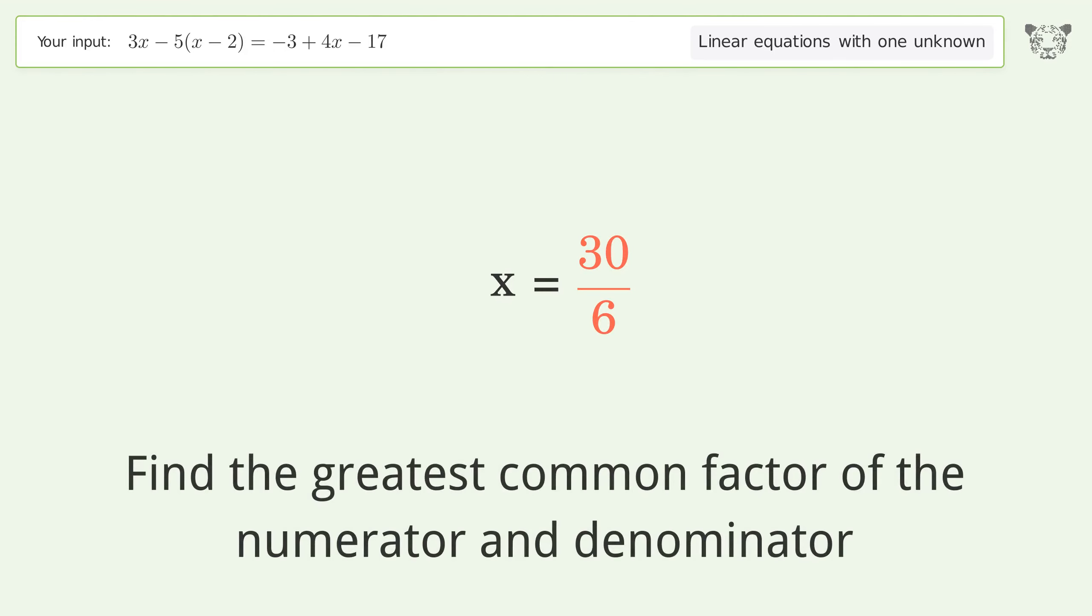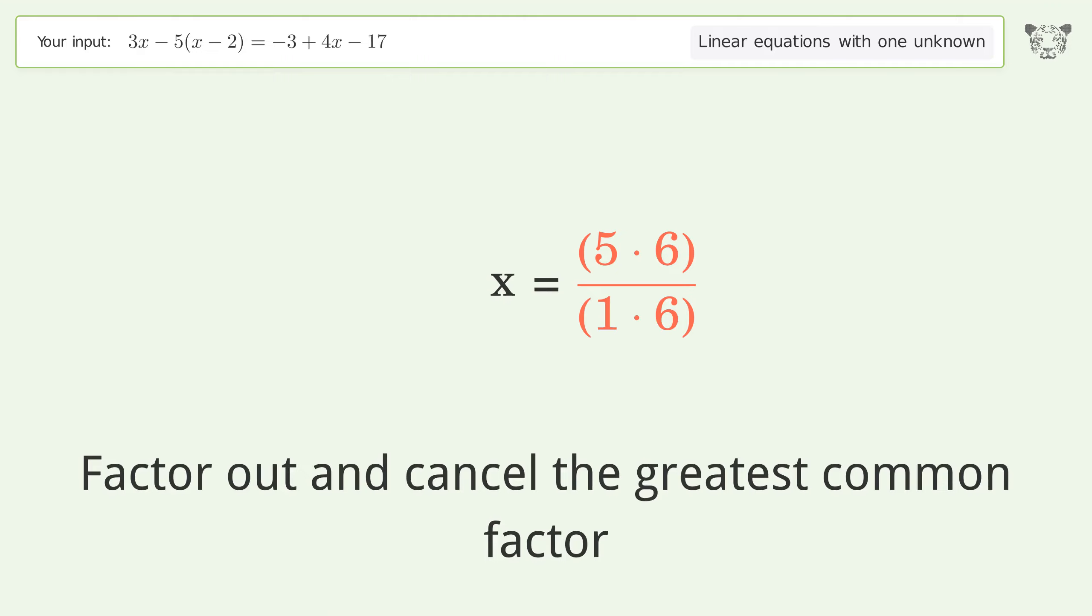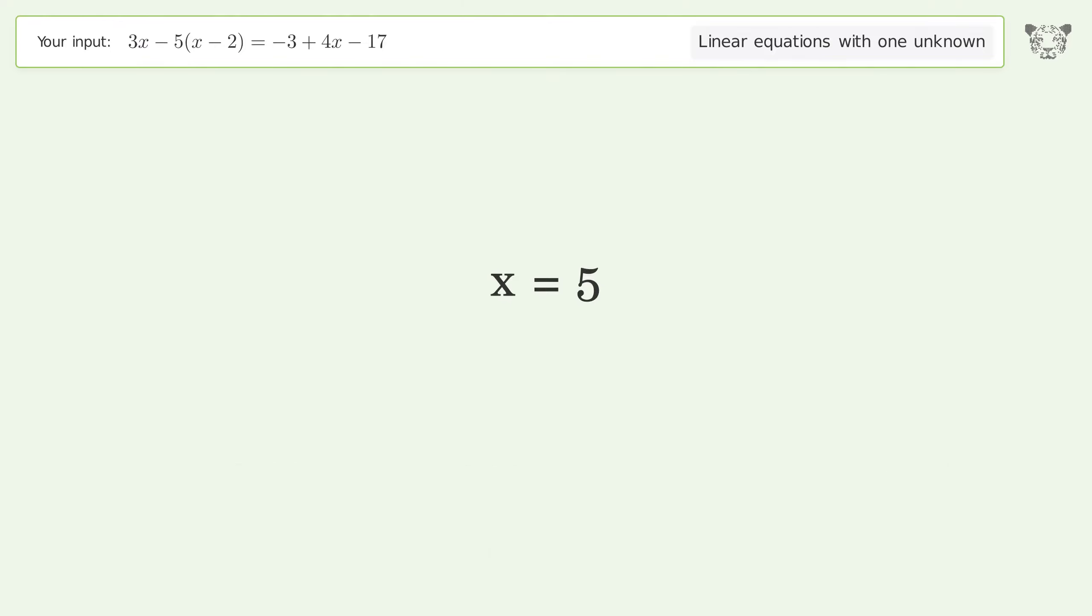Find the greatest common factor of the numerator and denominator. Factor out and cancel the greatest common factor. And so the final result is x equals 5.